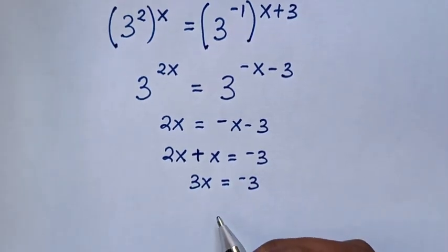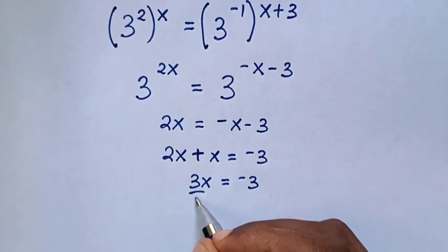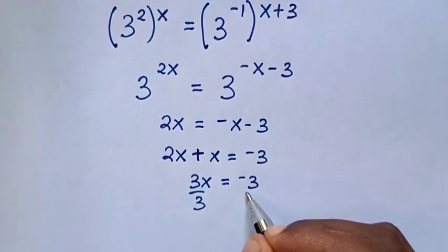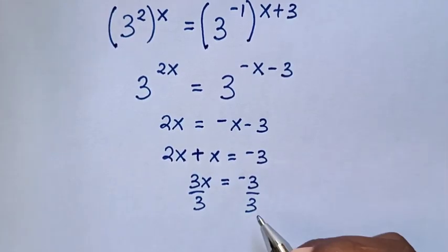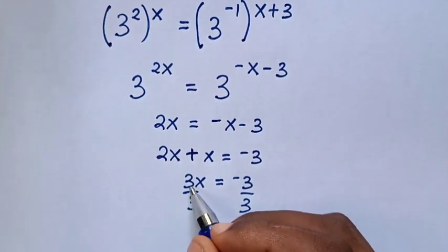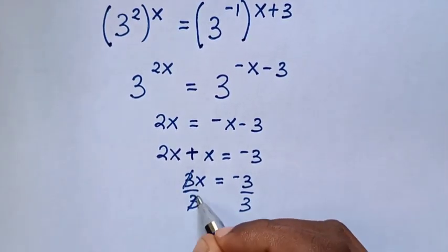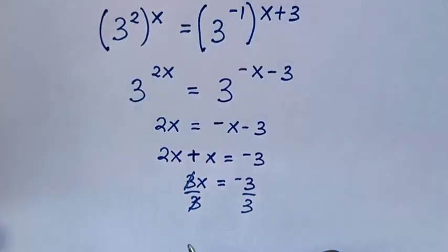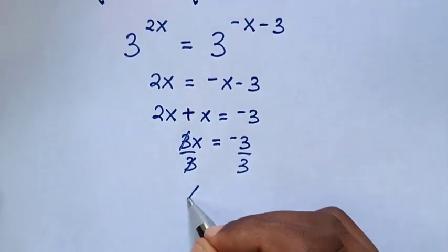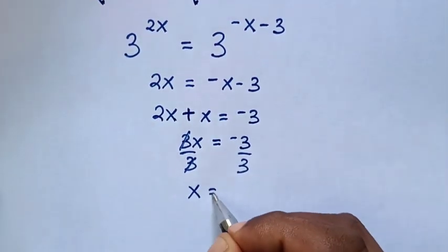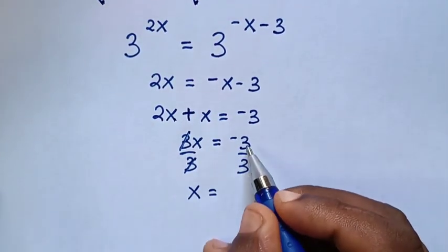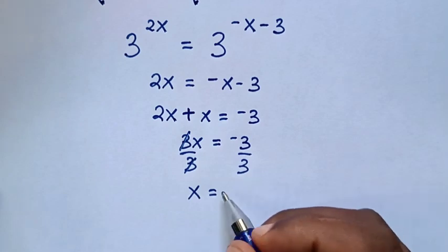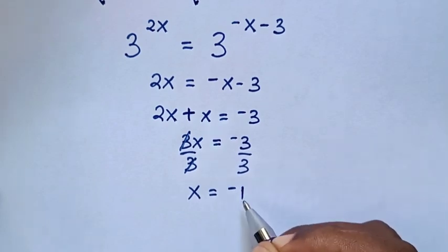Then we divide by 3 on both sides. So this 3 and this 3 will cancel. Then it will be x is equal to negative 3 divided by 3, which is negative 1.